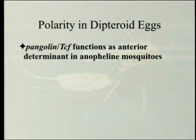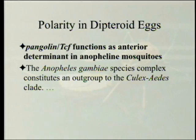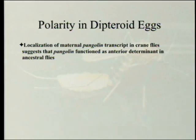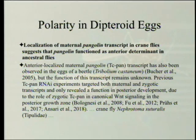Pangolin TCF functions as anterior determinant in Anopheline mosquitoes. In Culicine mosquitoes it's cucoid; in Anopheles gambiae species complex, which constitutes an outgroup to the Culex-Aedes clade, it's pangolin. Cucoid is a brand-newly discovered protein. Localization of maternal pangolin transcript in crane flies suggests that pangolin functioned as anterior determinant in ancestral flies, since pangolin is found in both Anopheles mosquitoes and crane flies. Anterior-localized maternal pangolin transcript has also been observed in the eggs of a beetle.